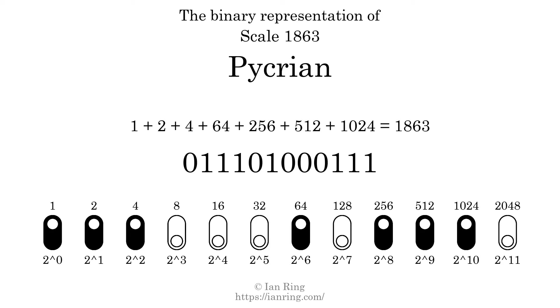The scale number in binary is 0, 1, 1, 1, 0, 1, 0, 0, 0, 0, 1, 1, 1, 1. Here are the harmonic triads present in this scale.